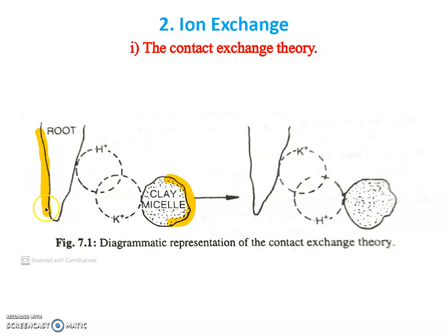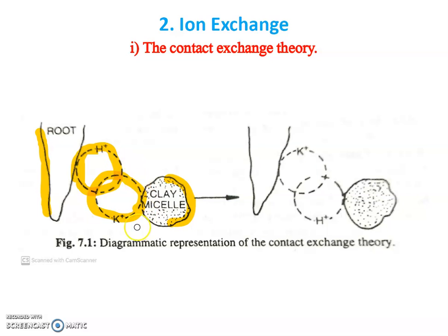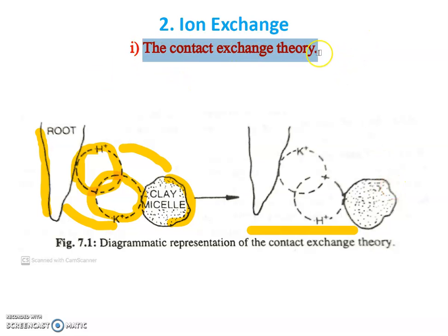When the oscillation volumes of two ions with the same charge overlap, one ion is exchanged with the other. This process is called contact exchange. In the diagram, this is a root and this is a clay micelle — a soil particle. Protons are attached to the root, and potassium ions are in contact with the clay particle. They oscillate and when they come into contact, they exchange — potassium goes to the root surface and protons go to the clay micelle. This is called contact exchange theory.